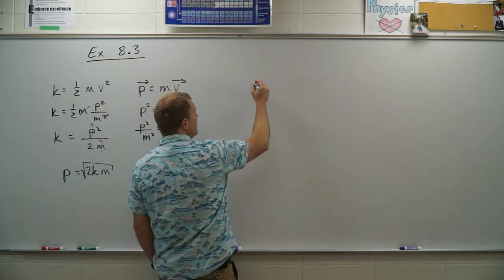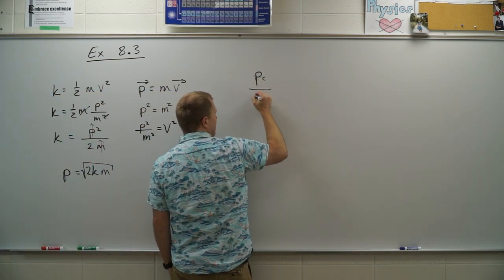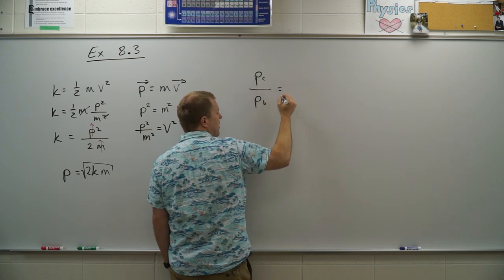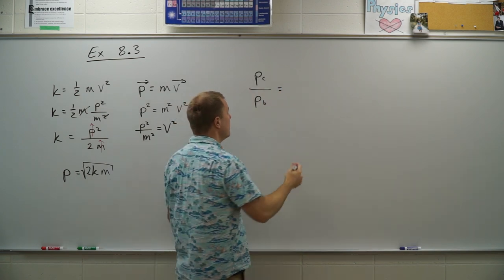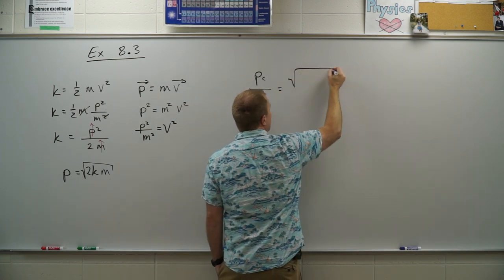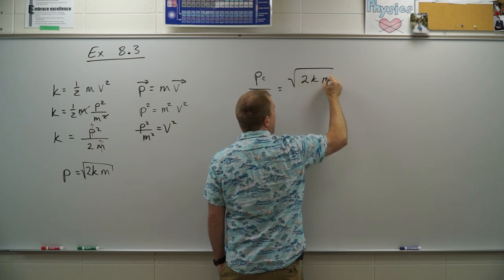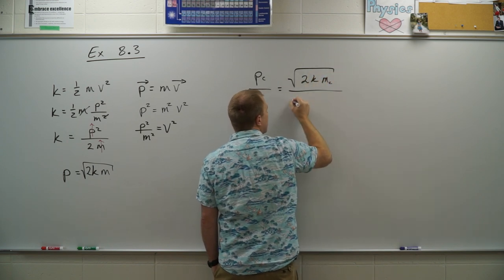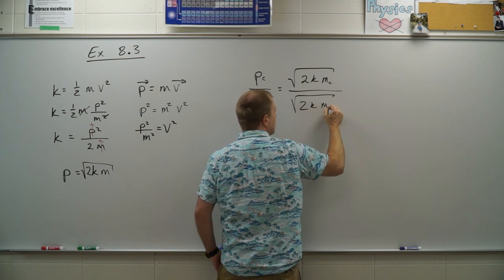And now I want the momentum of the cardinal divided by the momentum of the baseball. That will give me the ratio of these two. So I have the square root of 2k mass of cardinal divided by the square root of 2k mass of baseball.